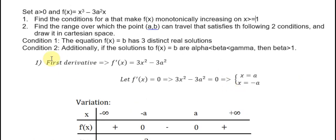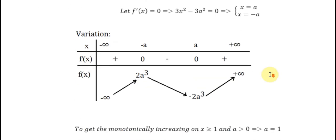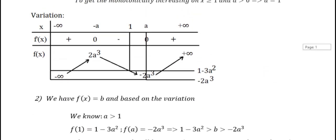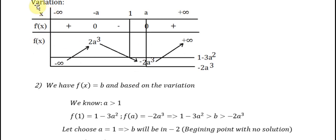Question 2: We want to find the range of a and b such that f equals b has 3 real solutions. We still use the variation table. If we want 3 solutions, the straight line b should be between these 2 lines. Because for condition 2, beta should be greater than 1.